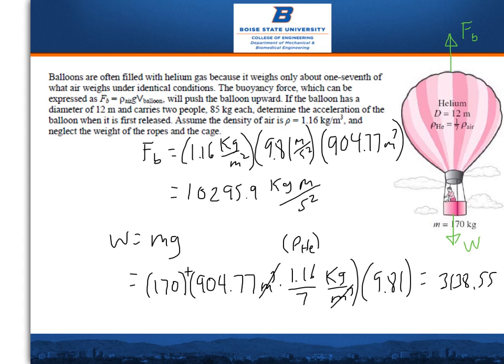which is the volume times the density, gravity, which is the same volume as before, so 904.77 meters cubed,